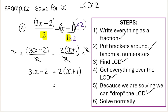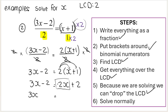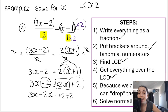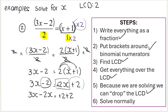Remember from our previous videos on linear equations, we need to distribute. So it's 2 times x which is 2x, and 2 times 1 which is positive 2. Then we get the x's to one side. 3x stays here; this is a plus 2x, so the inverse operation is minus 2x. The inverse operation of minus 2 is plus 2 — technically we're doing inverse operations, adding 2 on both sides. So here 3x minus 2x is x, and 2 plus 2 is 4.